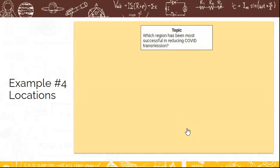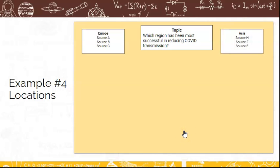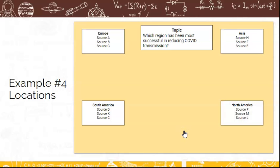Let's take a look at another example. This one relates to a lot of student research projects, the idea of locations. For this particular topic, we're looking at which region has been most successful in reducing COVID transmission. Many of my resources might be related to Europe. Others might be looking at Asia. Some might be looking at South America and another set might look at North America. So it becomes very obvious that these are all very continental, very large scope.